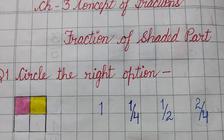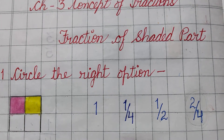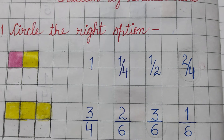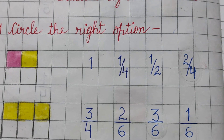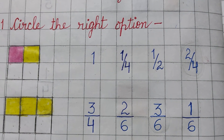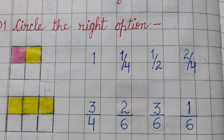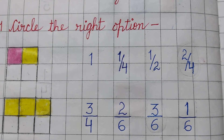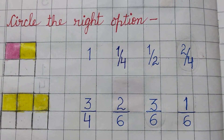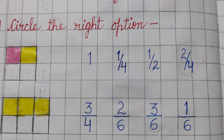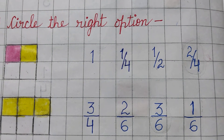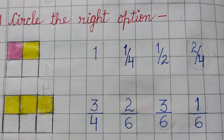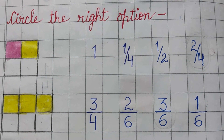The question is: circle the right options. I have given some shapes and we have to find out the fraction of the shaded part. Some parts of these shapes have been colored and we have to find out the fraction of the shaded or the colored part.